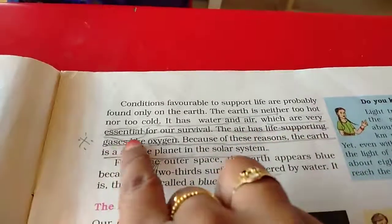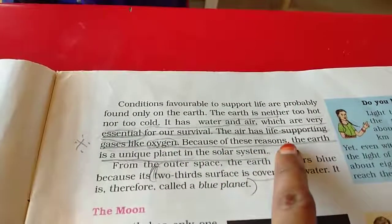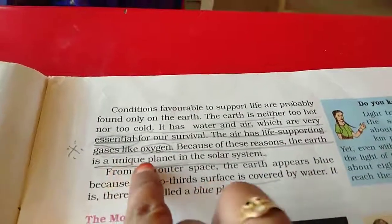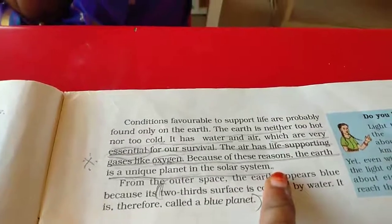Especially oxygen, we need it to live. The air has life supporting gases like oxygen. Because of these reasons, the earth is a unique planet in the solar system. What is the unique planet in the solar system? Earth.